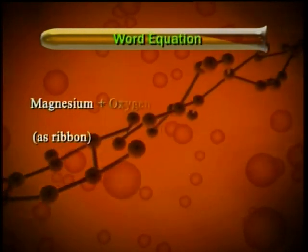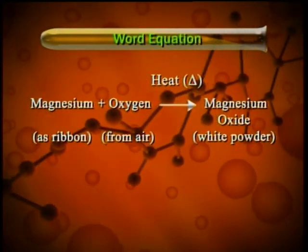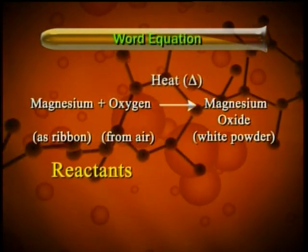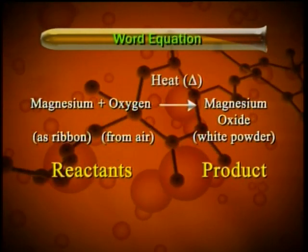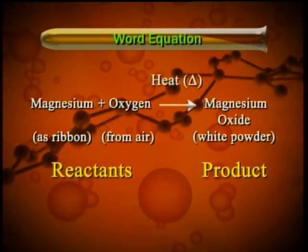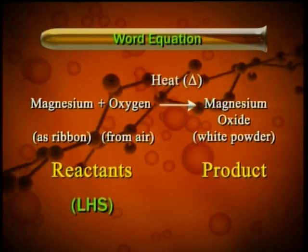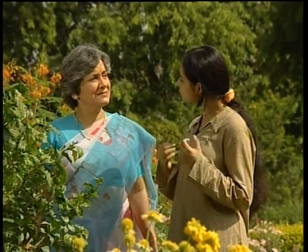Magnesium ribbon plus oxygen from the air react on heating to form magnesium oxide in the form of a white powder. Magnesium and oxygen are the reactants and magnesium oxide is the product. This chemical reaction can be represented in the form of a word equation in which the reactants are written on the left hand side with a plus sign between them. Similarly, products are written on the right hand side. If we use the formulae of the reactant and product molecules or atoms instead of a word equation, we can write a chemical equation which is far more concise and useful.